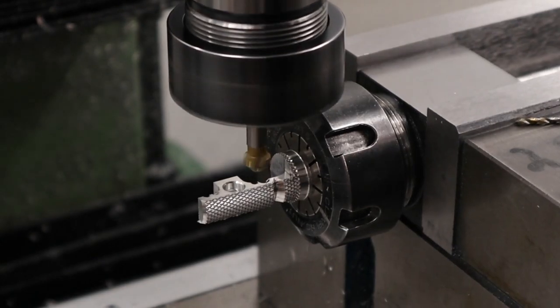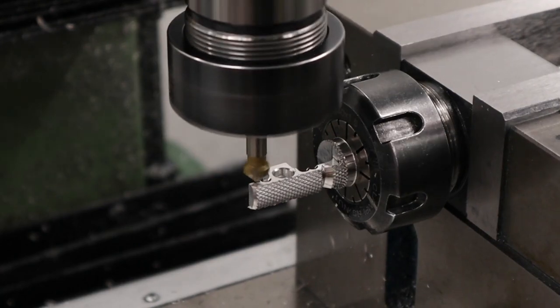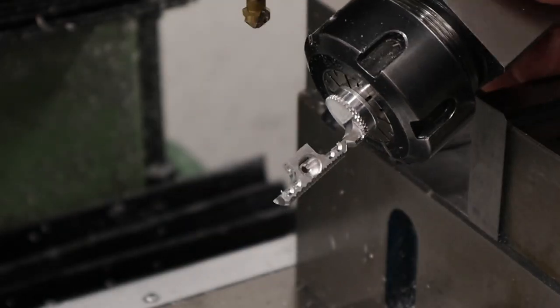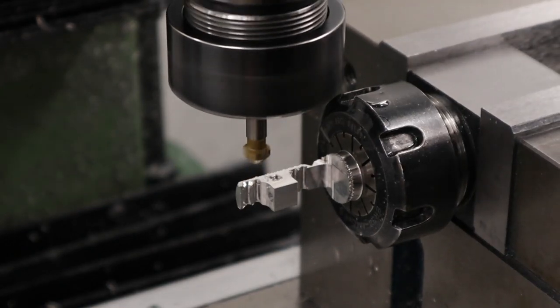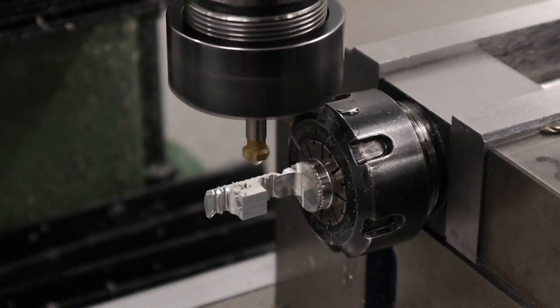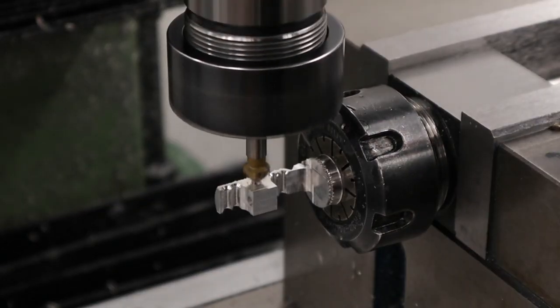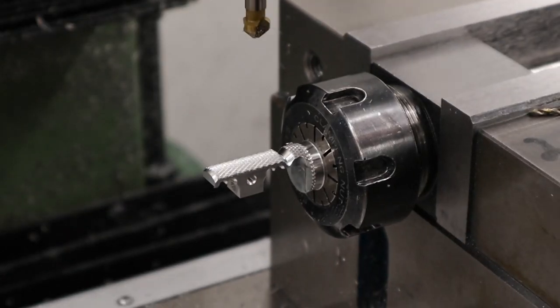With the waste material removed we can come back through with a countersink and countersink this side of the mystery holes. Again making good use of the four-sided collet block as we flip the part, reverse our coordinates and countersink the other side of the holes successfully. Finally finishing out on this side by chamfering the M3 hole.